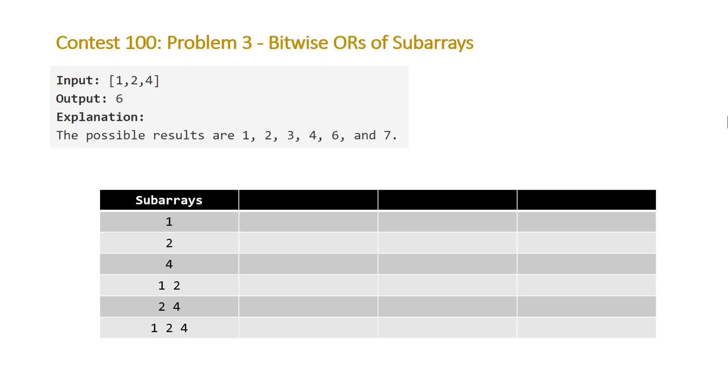What does this look like? We start by taking the subarrays. That's going to consist of each of the elements individually because that is a subarray unto itself, and then the first two elements, the last two elements, and all of the elements. So that gives us 1, 2, 4, [1,2], [2,4], and [1,2,4].